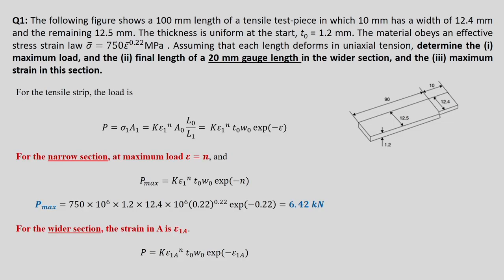The first question shows a 100 mm length of a tensile test piece — total is 100 mm, 90 plus 10 — in which 10 mm has a width of 12.4 mm, width is reduced, and the remaining 90 mm is 12.5 mm. So we have a 100 mm gauge length split into two parts: 90 mm with original width 12.5 mm, and 10 mm with 12.4 mm — 0.1 mm is reduced.